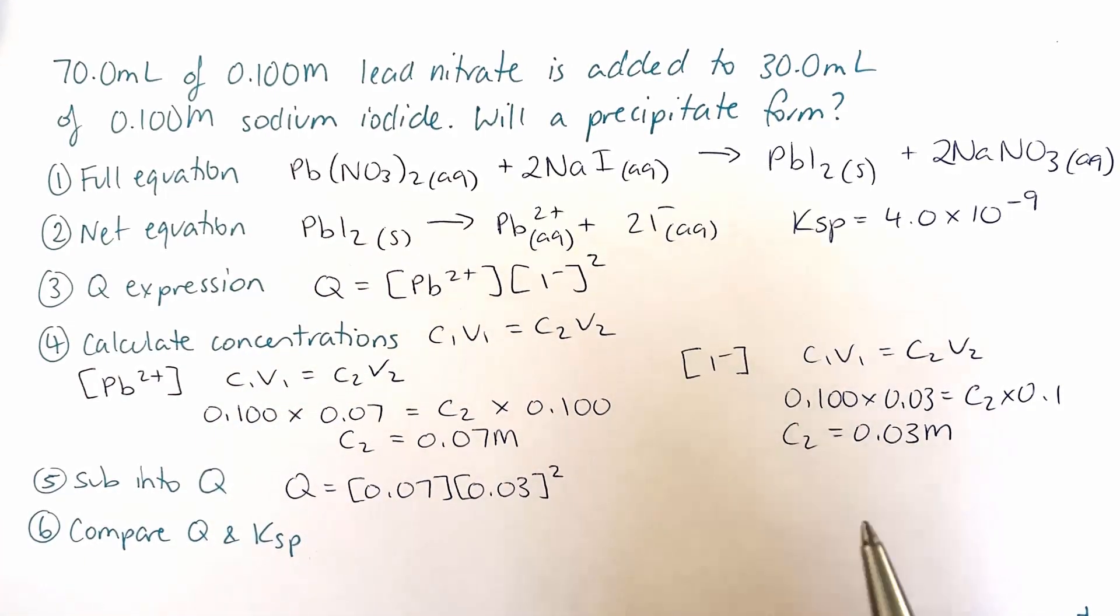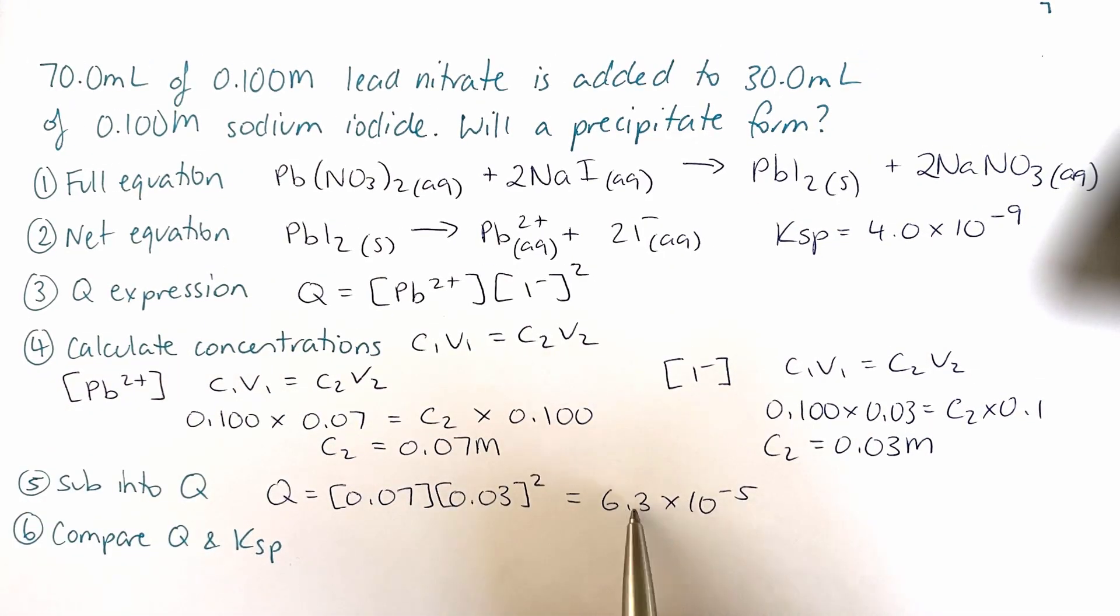So now we substitute those concentrations we've just calculated back into our Q and we get the answer is 6.3 times 10 to the minus 5. And now we want to compare our Q value with our Ksp. So if we compare our value of Q with our Ksp, Q is actually bigger than our Ksp and that means that a precipitate will form in this case.